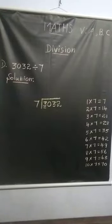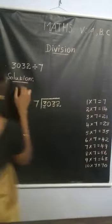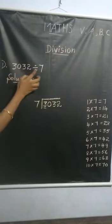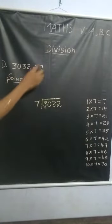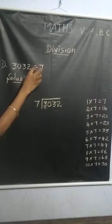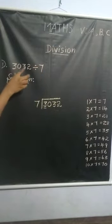Dear students, let us learn division. Let's see one example: 3032 divided by 7. This is division, and this is the division symbol. We divide 3032 by 7.